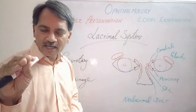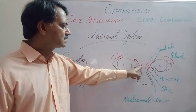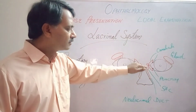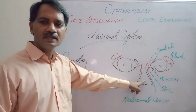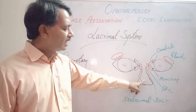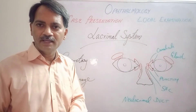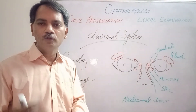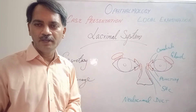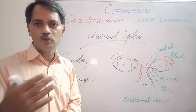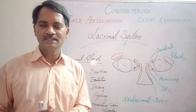The next time we close our eyes, the orbicularis oculi muscle presses on the lacrimal sac and pushes the collected fluid into the nasolacrimal duct and into the inferior meatus of the nose. From there, it is absorbed by the nasal mucosa into the bloodstream. This is how tear fluid flows across the eye and returns to the circulation.